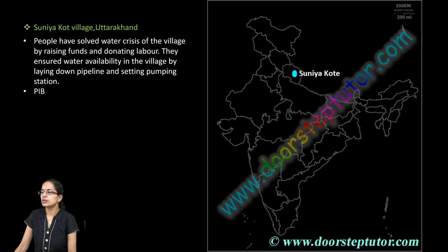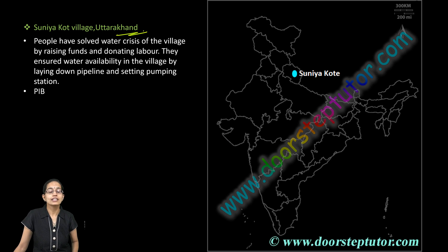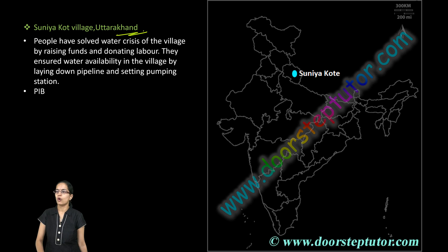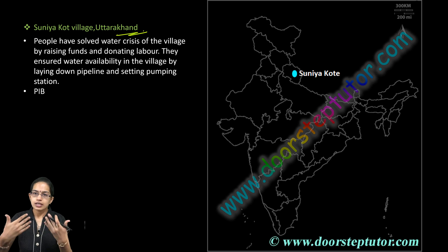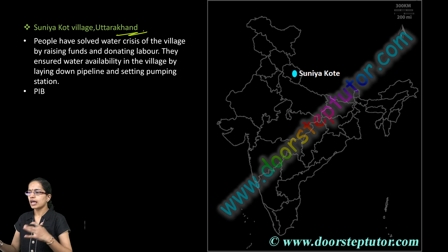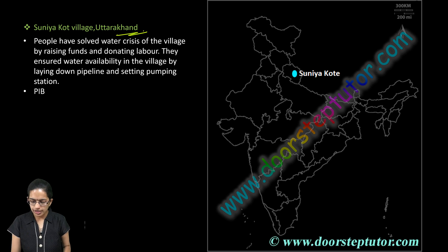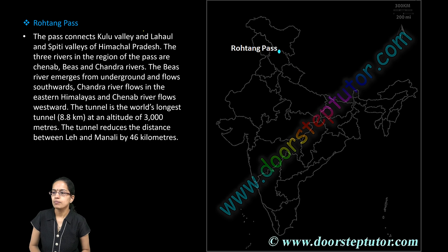The next is Sunya Kote village, which lies in Uttarakhand. It has been in news recently because the water crisis problem in Sunya Kote has been resolved by people coming together, creating a fund and donating labor to make water available for their village. This was again a very important coverage in PIB.